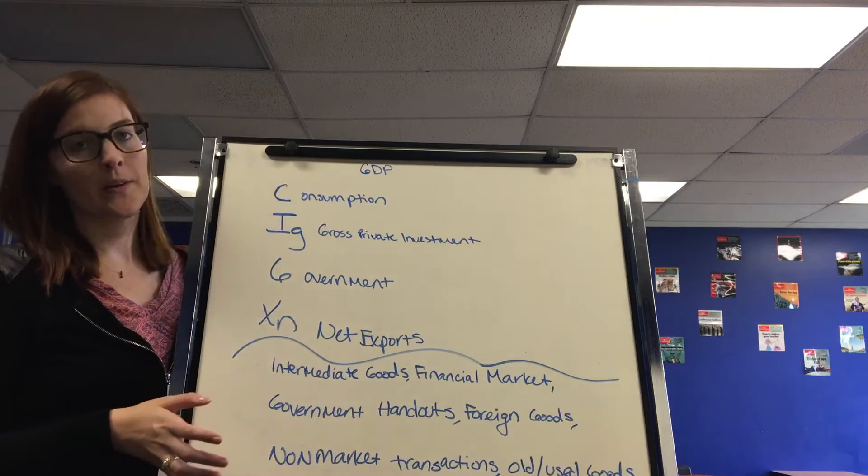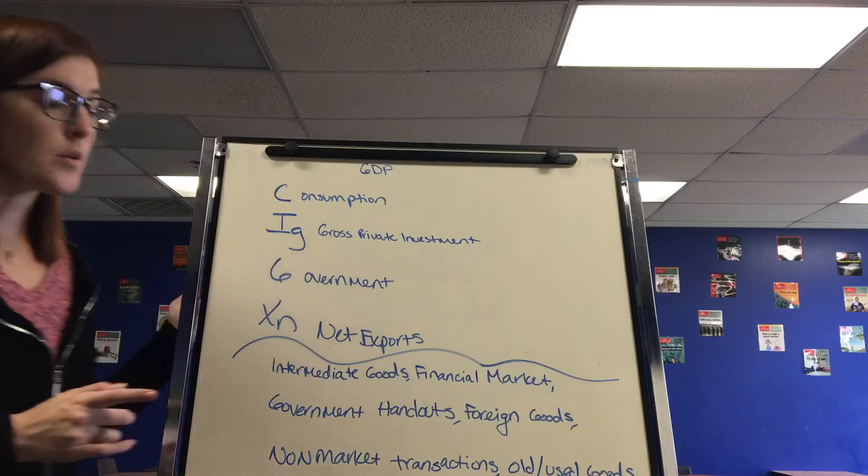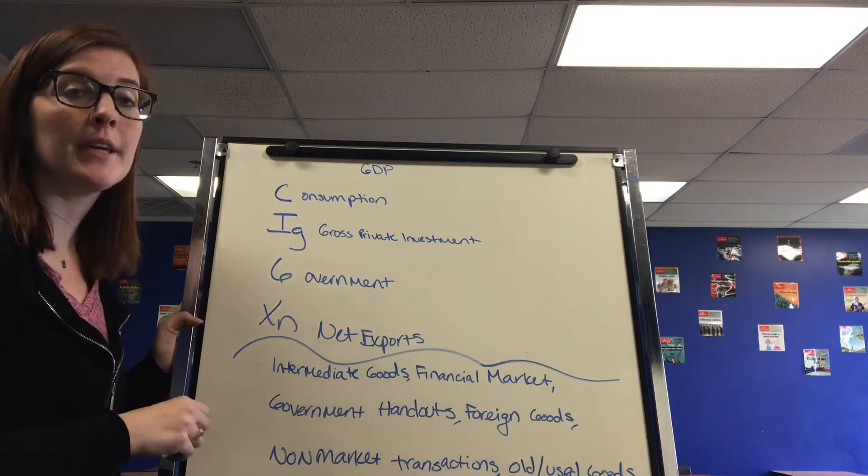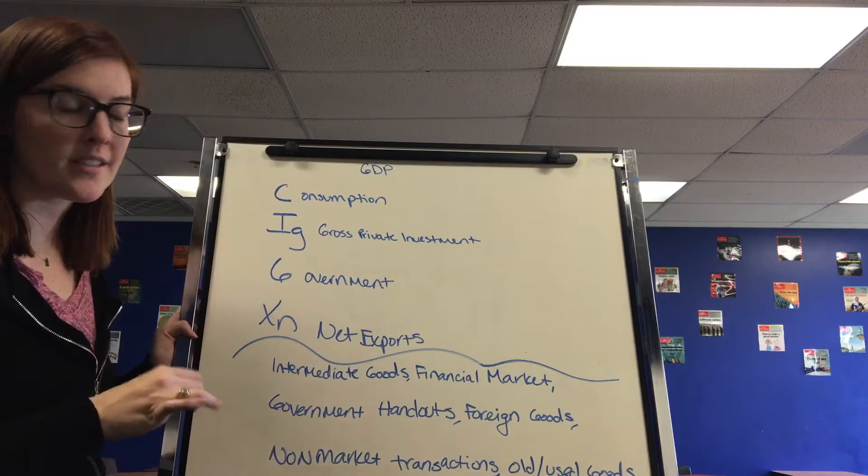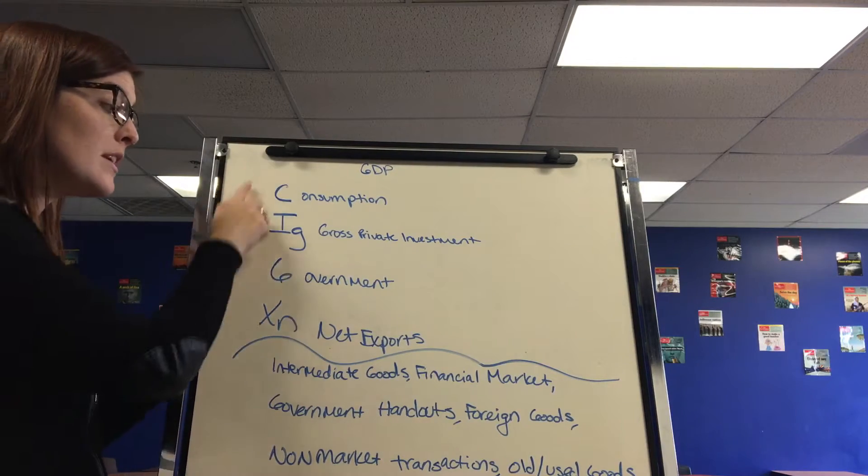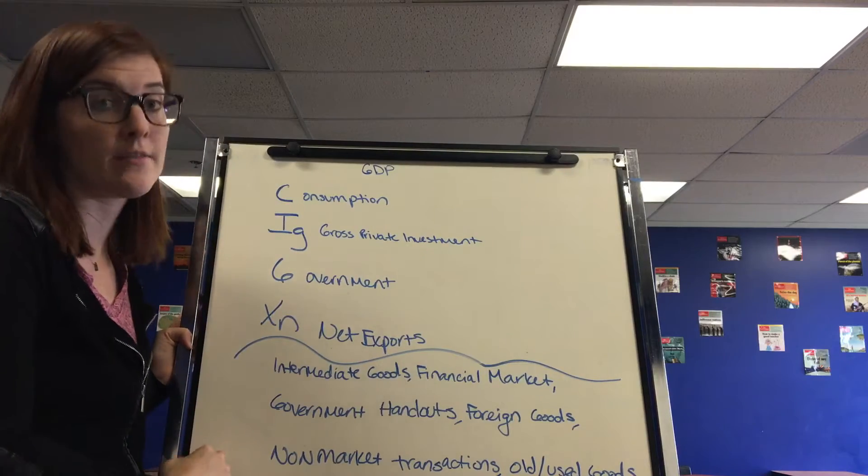This is the Unit 2 AP macroeconomics review. We're going to start with one of the most important concepts in macroeconomics, GDP or gross domestic product. This is something they test in the free response and the multiple choice all the time, so you need to understand all the components and how it affects the economy.